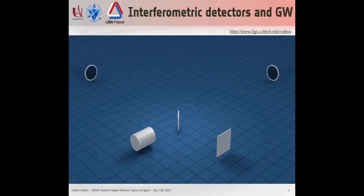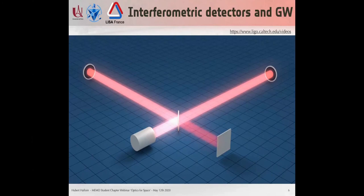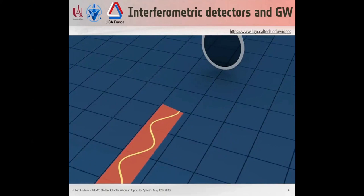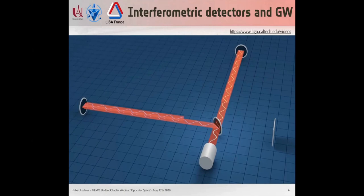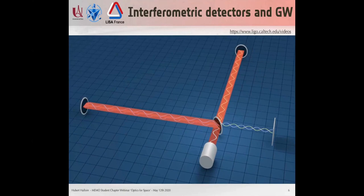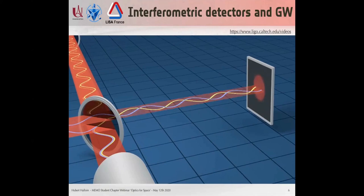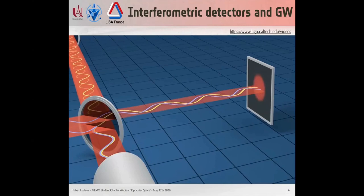Interferometry is particularly well suited to measuring the relative distance between two arms — in our case, to measure the effect of gravitational waves, which stretch one arm while shrinking the other. This gives access to the optical path length difference between the two arms, which is proportional to the gravitational wave amplitude. We use lasers at one micron wavelength, and for LISA we try to measure at the picometer level — one millionth of the laser wavelength.